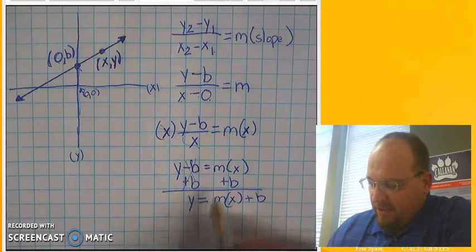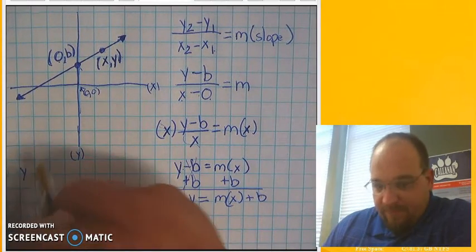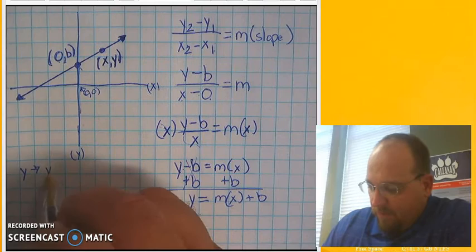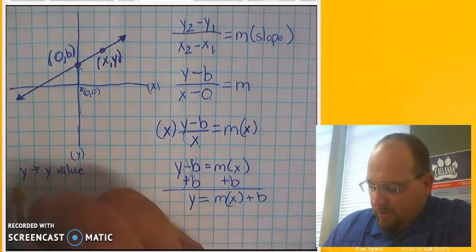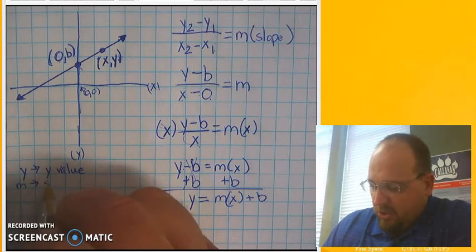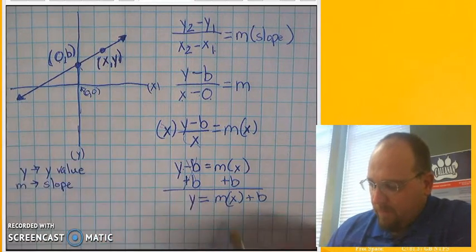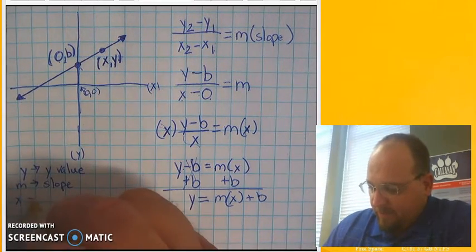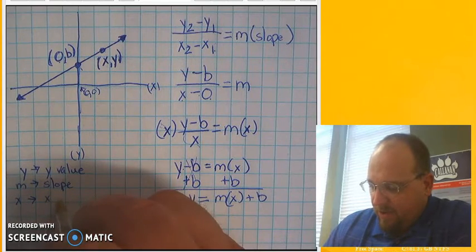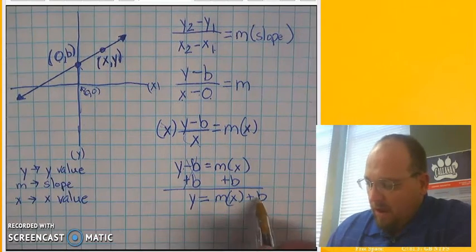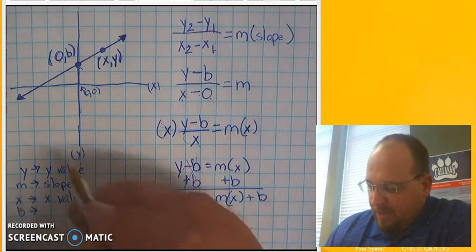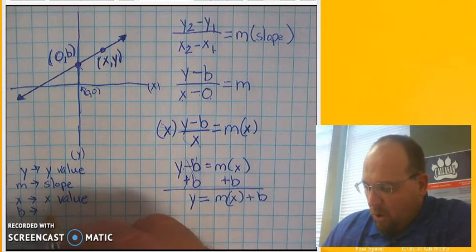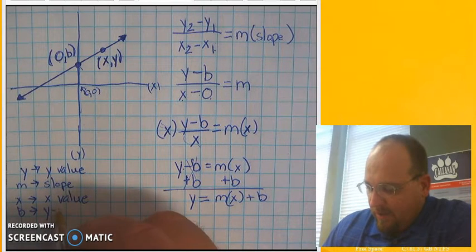What you need to understand from this is y is a y value. m is your slope. x is going to be an x value. And b, this is going to be a new concept, is going to be your y intercept.